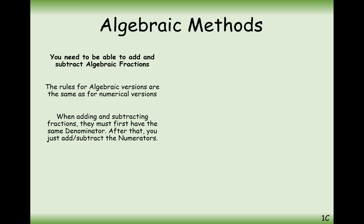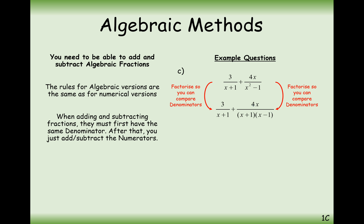That's a nice simple example, but realistically the questions you're going to be given are something a bit more like this: 3 over X plus 1, plus 4X over X squared minus 1. A good idea to start is to split the denominator of the right-hand fraction into its factors. So in this case it's going to be 4X over (X plus 1)(X minus 1). We can already see that both denominators share the factor X plus 1.